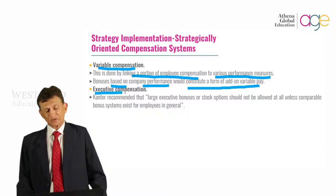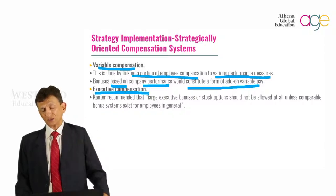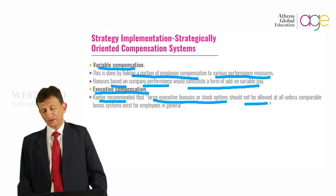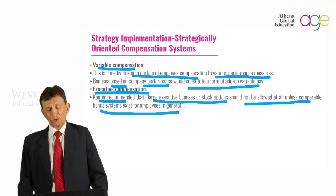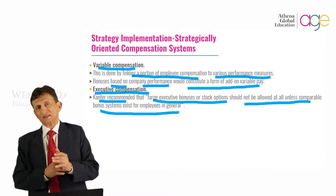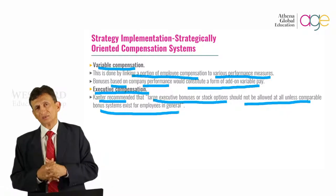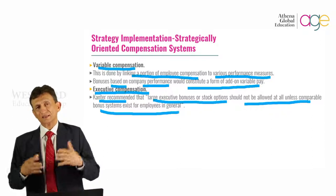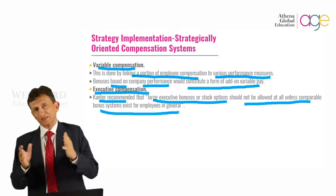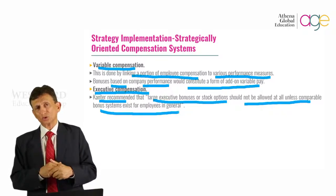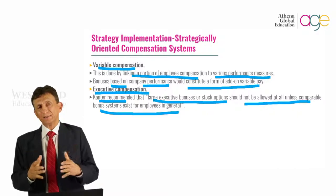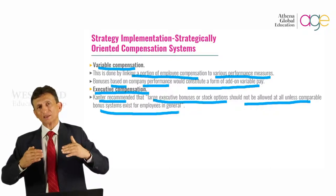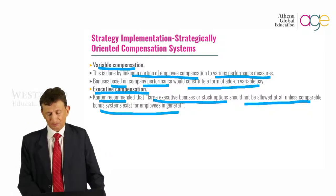Another important consideration is executive compensation — the salary structures for management and top-level management. Cantor recommended that large executive bonuses or stock options should not be allowed unless a comparable bonus system exists for all employees in general. Since the last recession, which started around 2007, CEOs and higher-ranking directors and managers taking away a major chunk of salary became a challenge. What Cantor recommended was equity — not the same pay for everyone, but substantial increases across the whole board of employees.